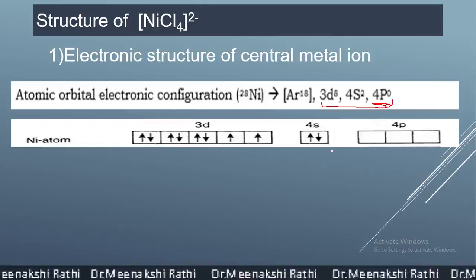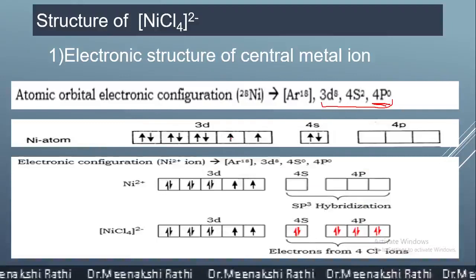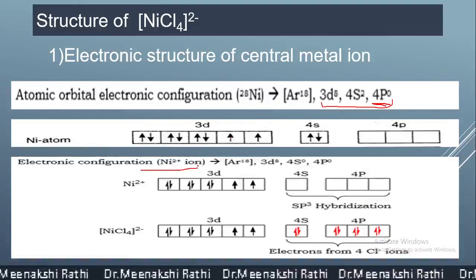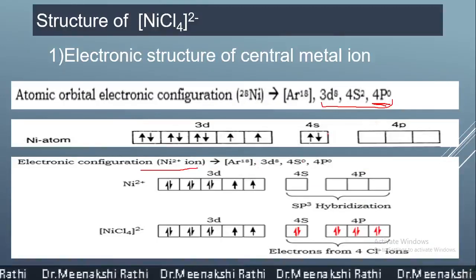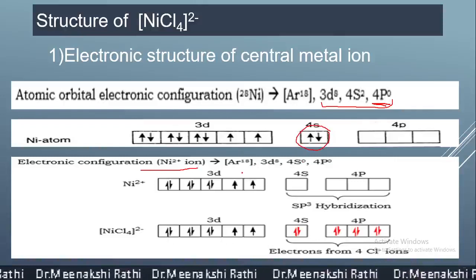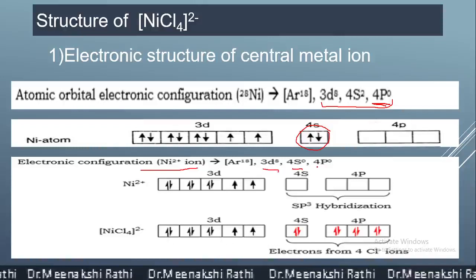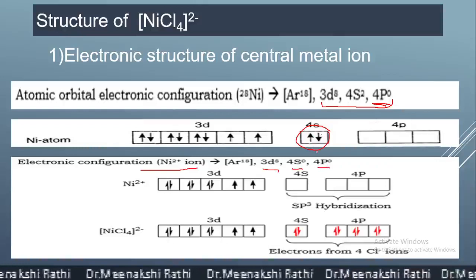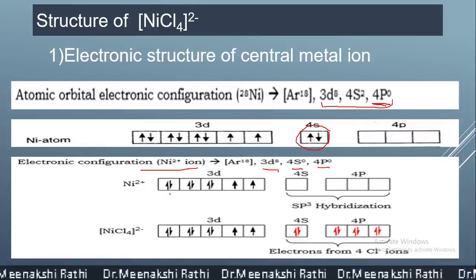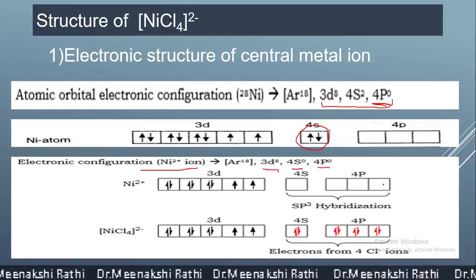In NiCl₄²⁻, nickel has a plus 2 charge, so the electronic configuration of Ni²⁺ requires removing 2 electrons from the S orbital. The configuration becomes [Ar] 3d8, 4s0, 4p0. In the box diagram for Ni²⁺, 3d8 remains, while 4s0 is now vacant and 4p0 was already vacant.